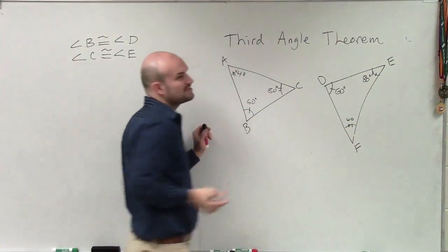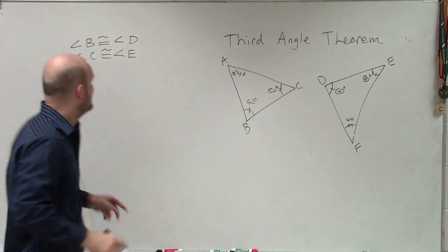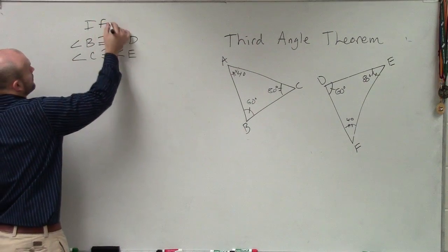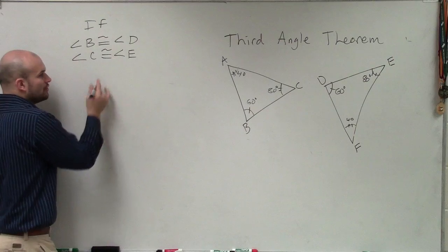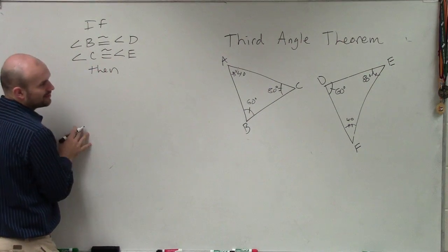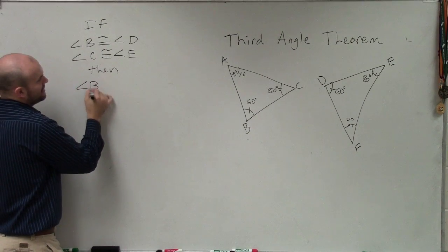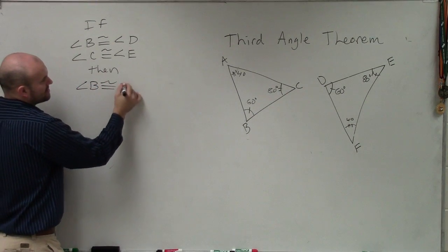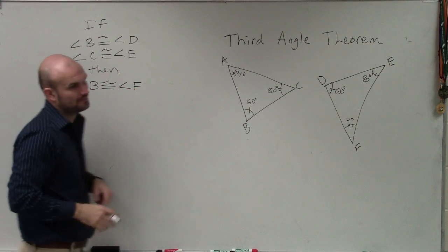But the main important thing is, without even dealing with numbers, if you have two angles that are congruent, then your third angle has to be congruent, which would be angle B is congruent to angle F.